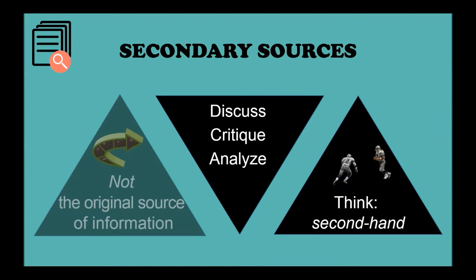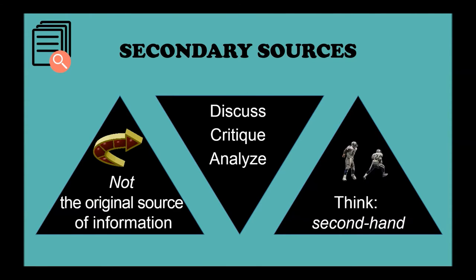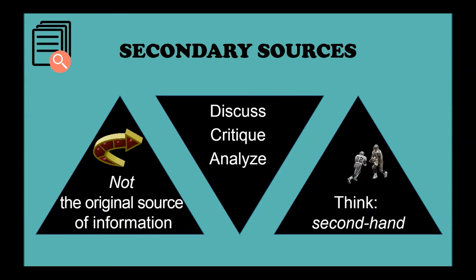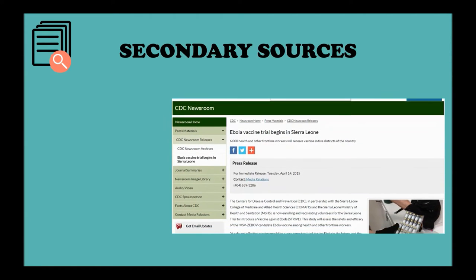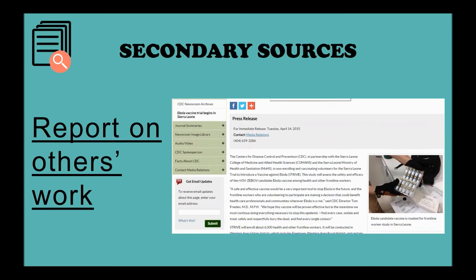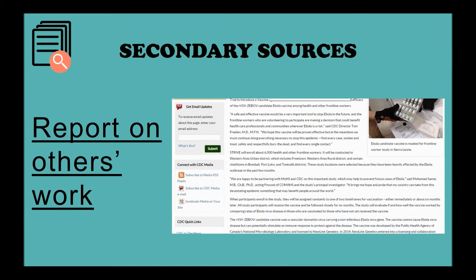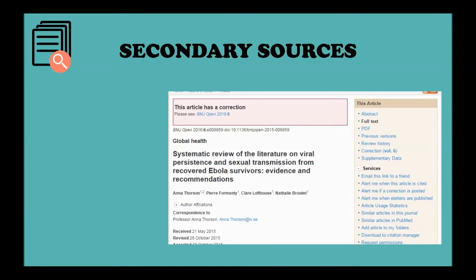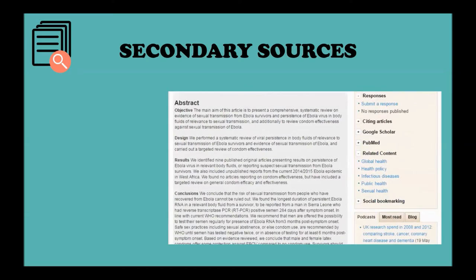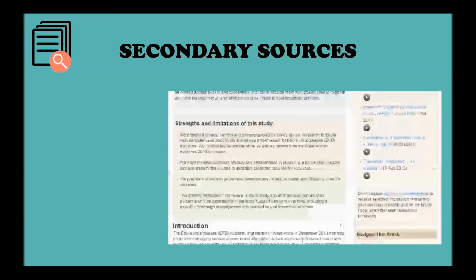Secondary sources are not the original sources of information — they interpret, discuss, critique, and analyze the content found in primary sources. You might think of this as second-hand information. This news article is reporting on research into a vaccine for the Ebola virus. It doesn't give the details of the research, but as a secondary source, it gives us a summary. A scholarly article that qualifies as a secondary source makes connections between research and comments on the results of other studies.